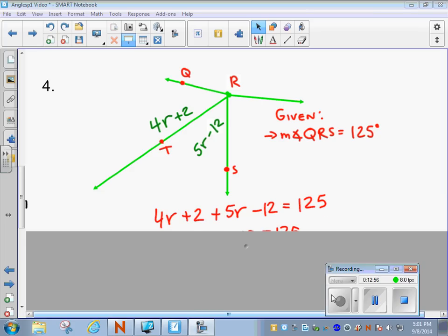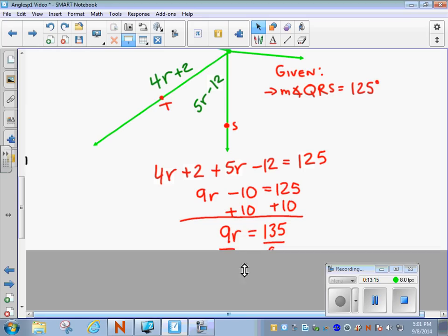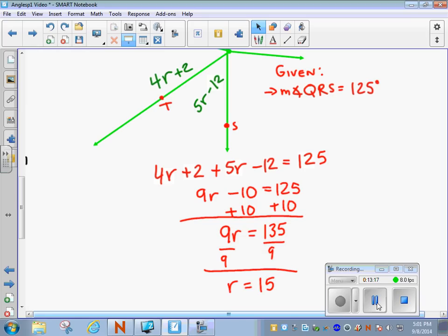Okay, there you have it. That's the equation she wrote. The 4R plus 2 plus the 5R minus 12 equals 125. This angle plus this angle equals the whole angle. I'm going to go ahead and just move through the algebra for this. And you can take a look at that in your slowness.